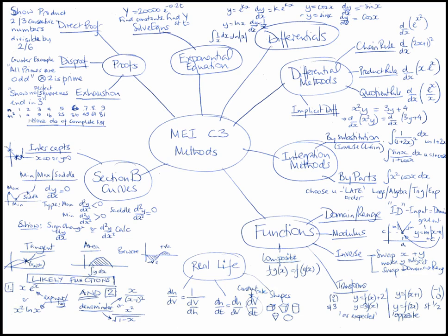There's a little mnemonic here about the order to pick your u: LATE - L-A-T-E - logs first, algebra, trig, and exponentials last.